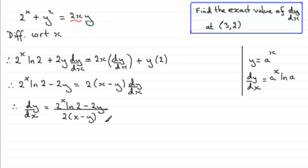I'm looking for the gradient at this point on the curve C. So we know that x equals 3, y equals 2. So at (3,2).